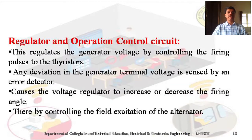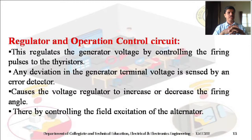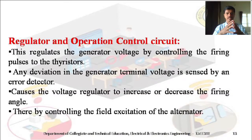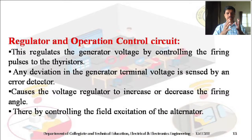The fourth part is the regulator and operation control circuit. The regulator and control circuit are used to maintain a constant output voltage. It regulates the generator voltage by controlling the firing pulses to the thyristors. According to the variation of the output voltage, the firing angle applied to the thyristor is changed to maintain a constant voltage.